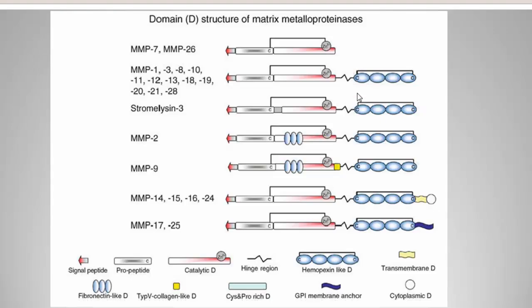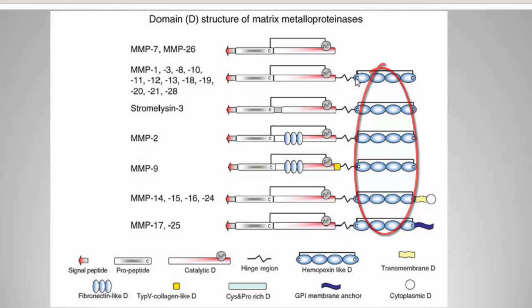There is a hinge region and a hemopexin-like domain, which helps in the binding of tissue inhibitors of metalloproteinases. Hemopexin-like domains are always adjacent to the hinge region. There are transmembrane domains — this is the extracellular part attached to the transmembrane — and a cytoplasm domain, meaning the whole protein structure extends from the extracellular part through the transmembrane and into the cytoplasm. There is also a GPI membrane anchor.